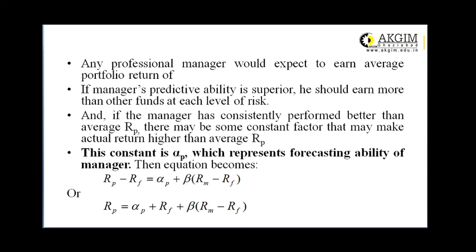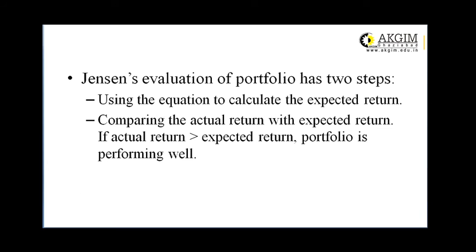The equation then becomes: Rp − Rf = α + β(Rm − Rf), or equivalently, Rp = α + Rf + β(Rm − Rf). By estimating this equation using regression techniques, Jensen claimed that alpha — the constant — reflects the professional manager's ability to predict price movements. On average, a fund's performance is worse than expected without professional management, so any investor purchasing such a fund must be selective in evaluating management. Jensen's evaluation of portfolio performance involves two steps: first, using the equation to calculate the expected return; and second, comparing the actual return with the expected return using beta, Rm, and Rf. If the actual return is greater than the expected return, the portfolio is considered to be performing well.